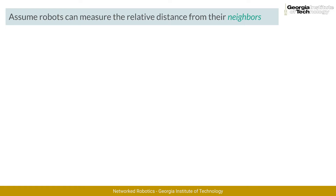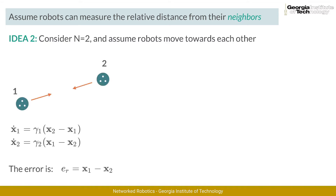With this assumption in mind, we propose a second control law, where robot 1 moves towards robot 2 and robot 2 moves towards robot 1. We can design a control law similar to the one we discussed previously, where now robots move towards each other as opposed to moving towards a fixed location. Note that this is possible given what we are assuming the robots can measure.